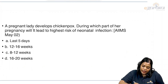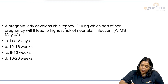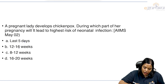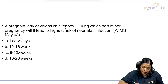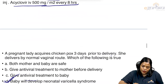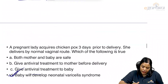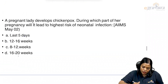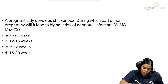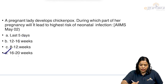Second question: During which part of pregnancy does chickenpox lead to the highest risk of neonatal infection? The highest risk of transmission is at 13 to 20 weeks. The best answer choice from the options would be 16 to 20 weeks.